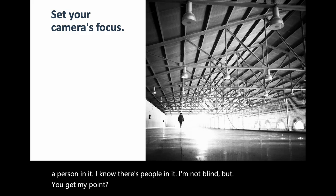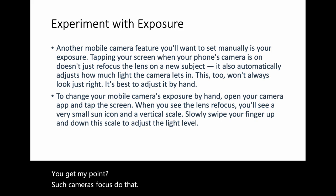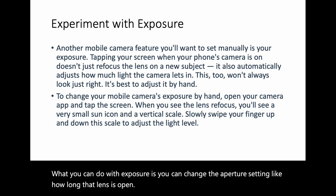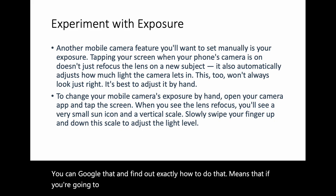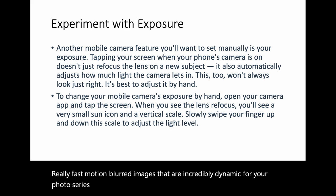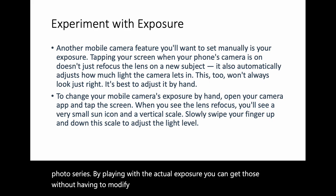Set your camera's focus — that's muy importante. And experiment with exposure. You can change the aperture setting, meaning how long that lens is open. You can Google exactly how to do that. If you're going to a club and want fast motion-blurred images, by playing with the actual exposure you can get those without having to modify them in Photoshop.